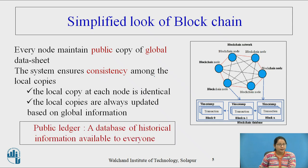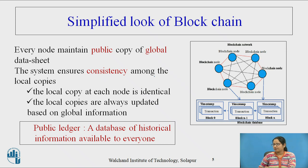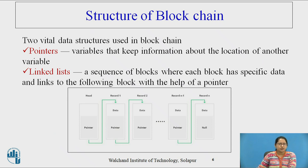Public ledger is an important term in blockchain. A public ledger is a database of historical information which is available to everyone. It is shared in a distributed environment for each and every node. Blockchain consists of a number of nodes that may belong to different organizations and communicate with each other.